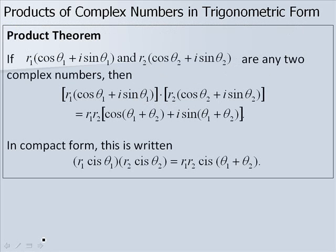Now when we multiply complex numbers in trigonometric form, we have the following product theorem. If we have r1 times the quantity cosine of theta 1 plus i sine of theta 1 and r2 times the quantity cosine of theta 2 plus i sine of theta 2, then when we multiply them our answer will be our r values multiplied, times the quantity cosine of the sum of our angles plus i sine of the sum of our angles.